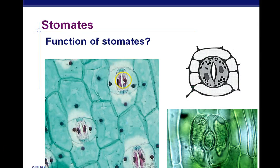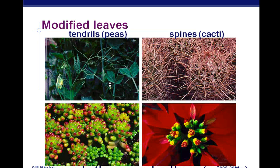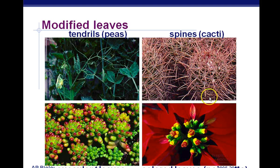Stomates function in gas exchange, and the guard cells close when conditions are dry. Some more modified leaves: flowers are modified leaves, spines on a cactus are modified leaves, and succulents like aloe vera also have modified leaves.